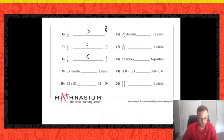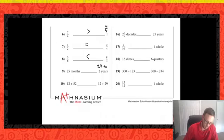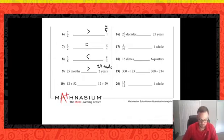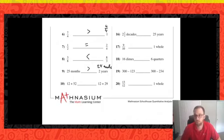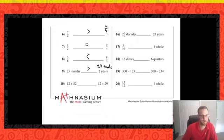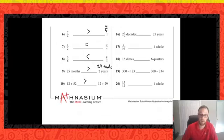Number nine: 25 months or two years? There are 12 months in one year, so two years is 24 months. Twenty-five months is greater. Number ten: 12 plus 52 versus 12 plus 29. On the left I'm adding more to 12 — my number grows by 52 versus only 29 — so 12 plus 52 is greater, without needing much calculation.